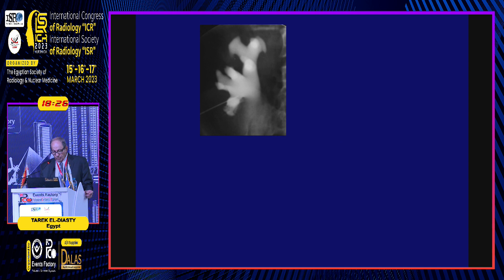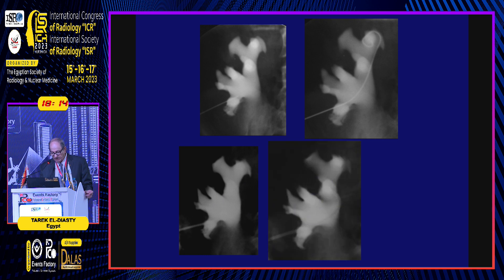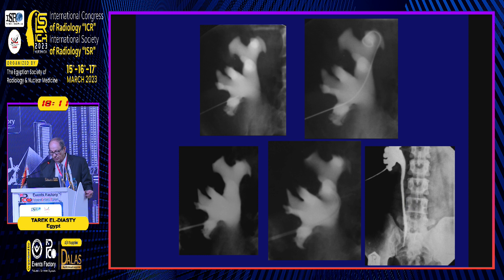We use ultrasound-guided puncture for the kidney, then opacify the system by contrast media, insert the wire and perform serial dilatation, and at the end insert the pigtail nephrostomy catheter and do the antegrade pyelography.